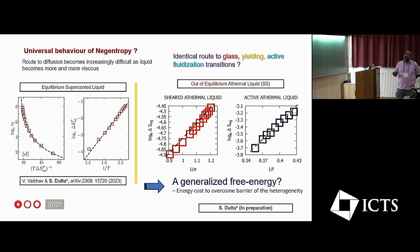So then we also dealt with some other kind of out-of-equilibrium transitions like here we dealt with yielding, here we are dealing with active fluidization.